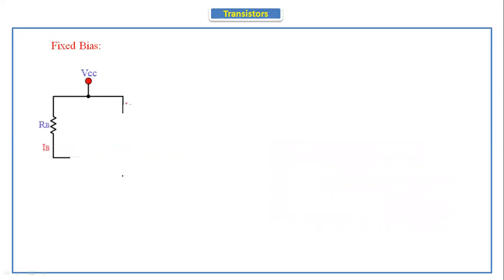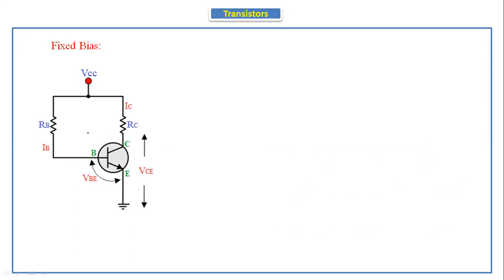If you see the fixed bias circuit — this is a fixed bias circuit. It has two resistors: base resistance and collector resistance, and a transistor. Here we are taking an NPN transistor. In the NPN transistor, the emitter current direction is outward, the base current Ib direction is inward, and the collector current direction is also inward.